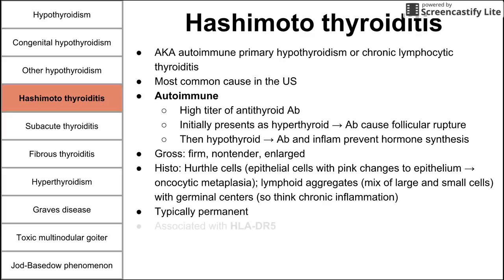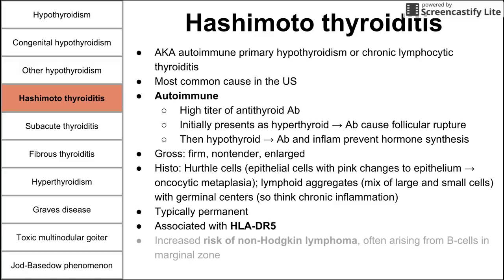This is typically a permanent disease. It's associated with the HLA-DR5 protein, which mediates the autoimmune response. Patients with Hashimoto's thyroiditis also have an increased risk of non-Hodgkin lymphoma, often arising from B cells in the marginal zone — an important association to know.